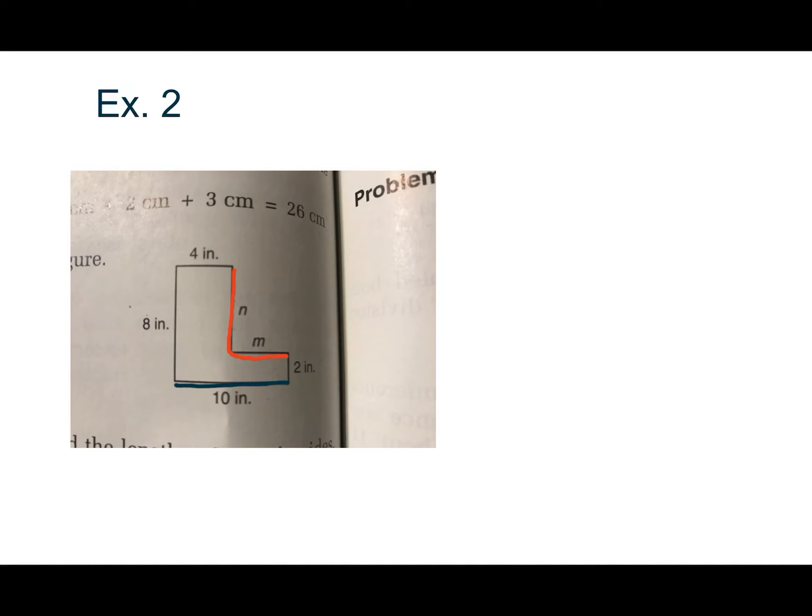This entire side is 10. So if we were to extend this out this way, this would be 6. So M is equal to 6. And if we were going to extend this out at this way, here, then we would see that this is also 6. So N is also 6, because 6 plus 2 is 8.